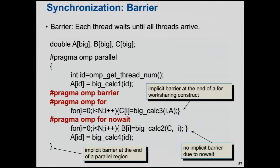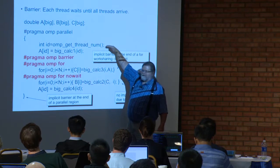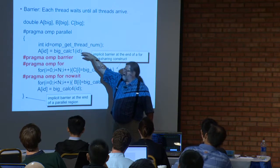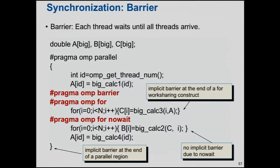Imagine this example. I have three big arrays: A, B, and C, with some large values. I'm going to enter a parallel region — this is the SPMD, single program multiple data style, where I execute all the code redundantly. Each thread picks up its ID, then does some big, ugly, horrible calculation and parks the value in an element of array A. I'm going to use that array later, so no thread can go on until everyone is done with it.